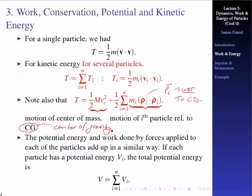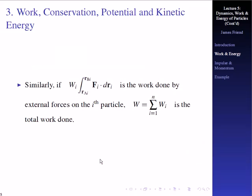Potential energy and the work done by forces applied to each of the particles add up in a similar way. So if we were to write each particle has a potential energy v sub i, the total potential energy is just given by a summation of that.